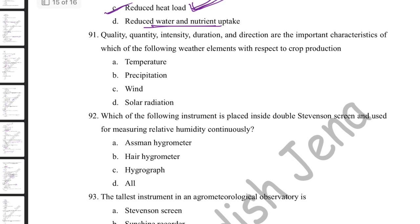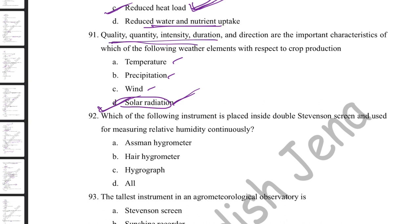Quality, quantity, intensity, duration, and direction are important characteristics of which weather element? Solar radiation — quality refers to wavelength, quantity/intensity refers to amount, and duration affects crop growth. Temperature has quantity but not quality in this sense; precipitation has quantity, intensity, and duration but not quality; wind has direction and intensity but not quality.